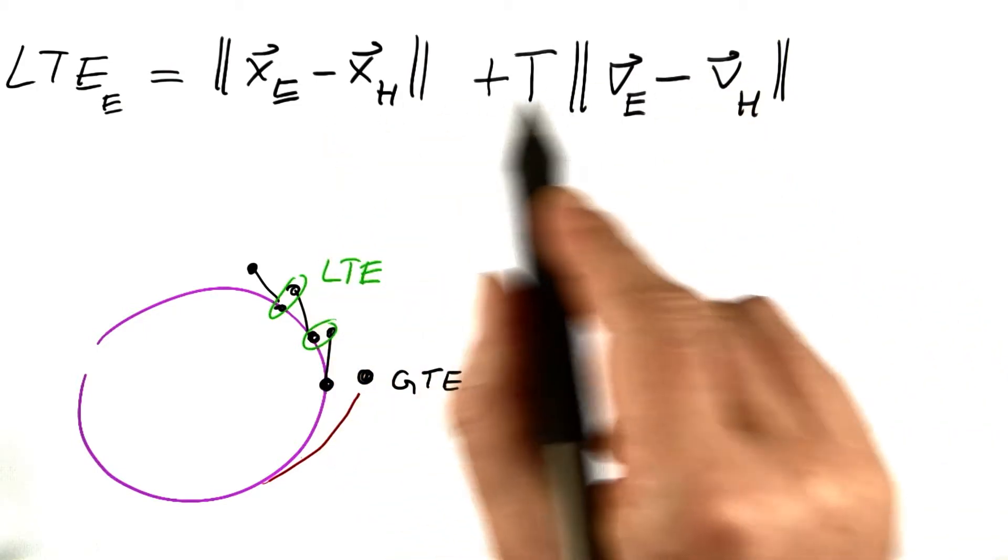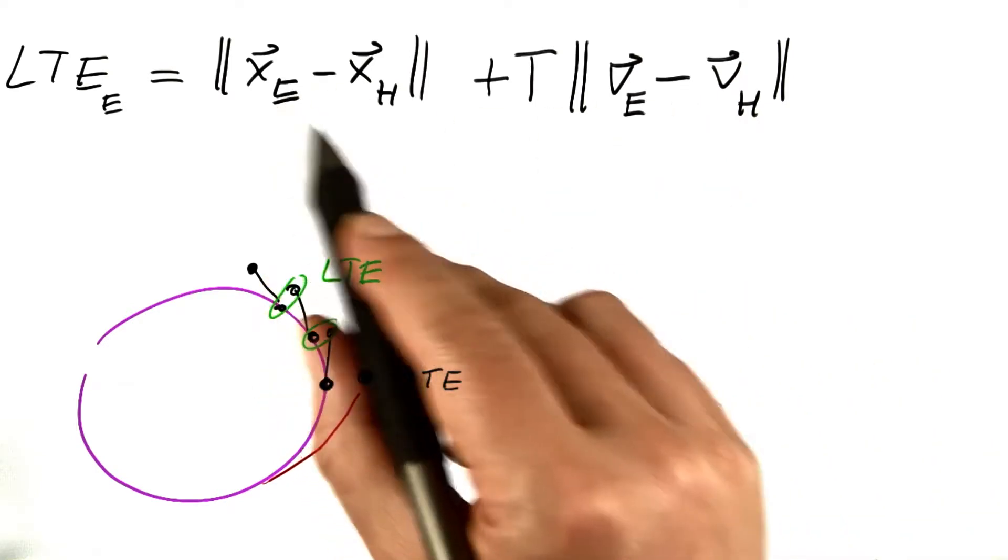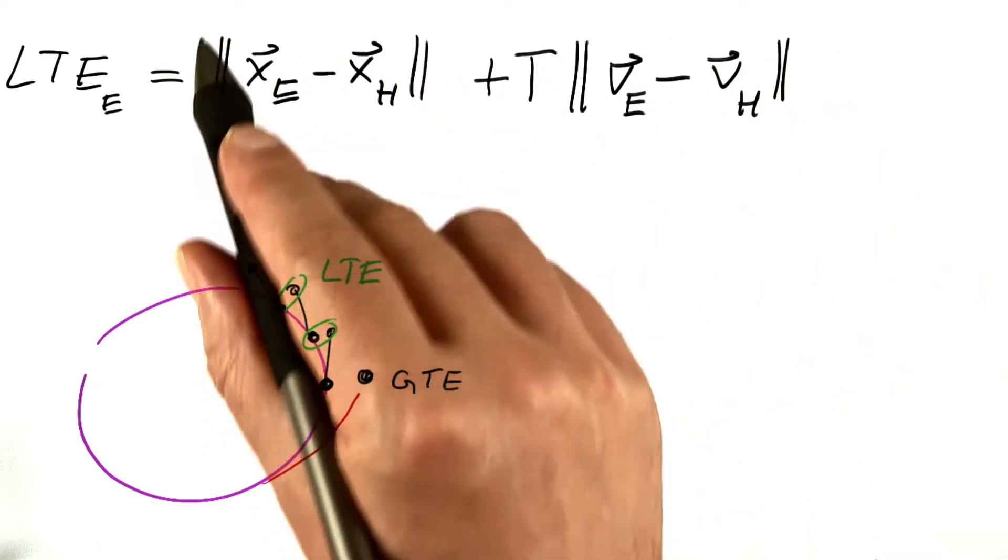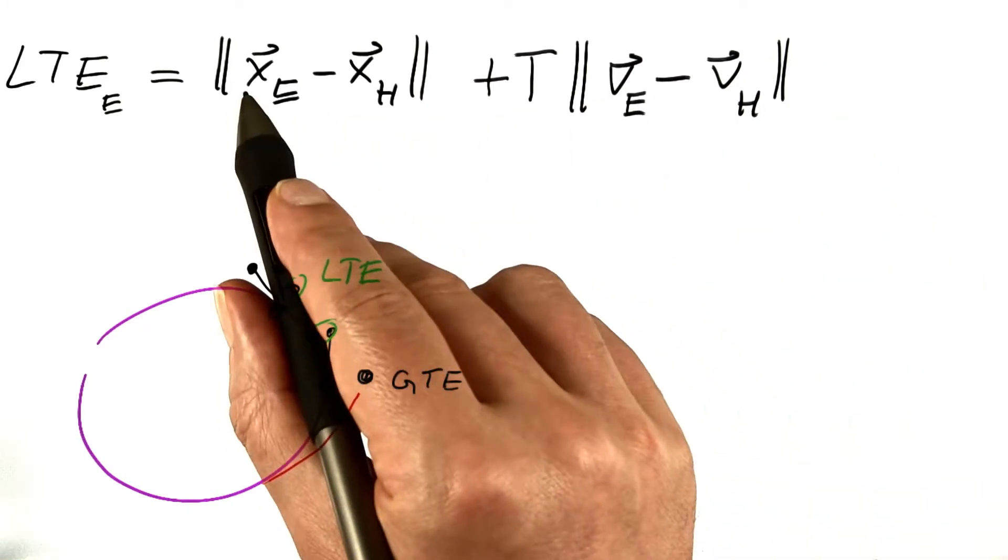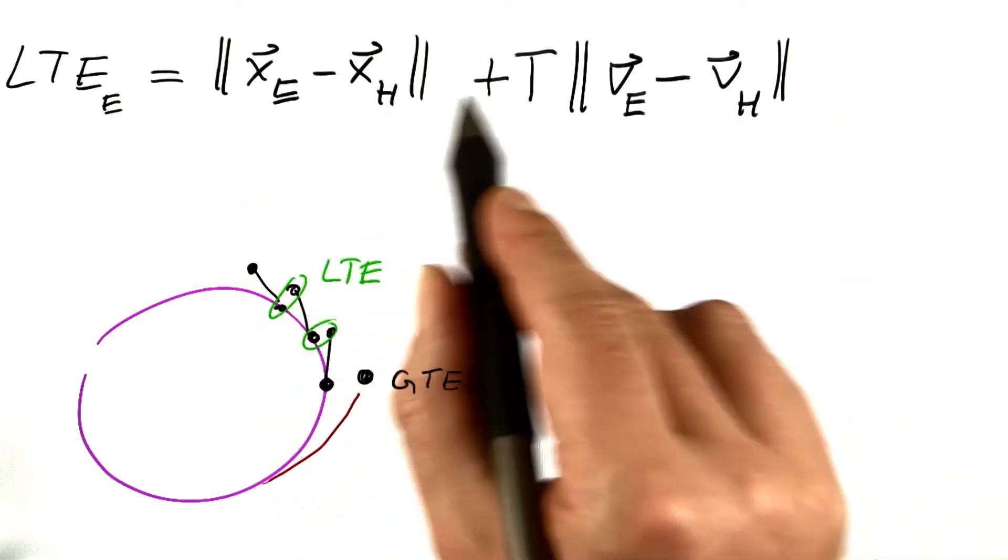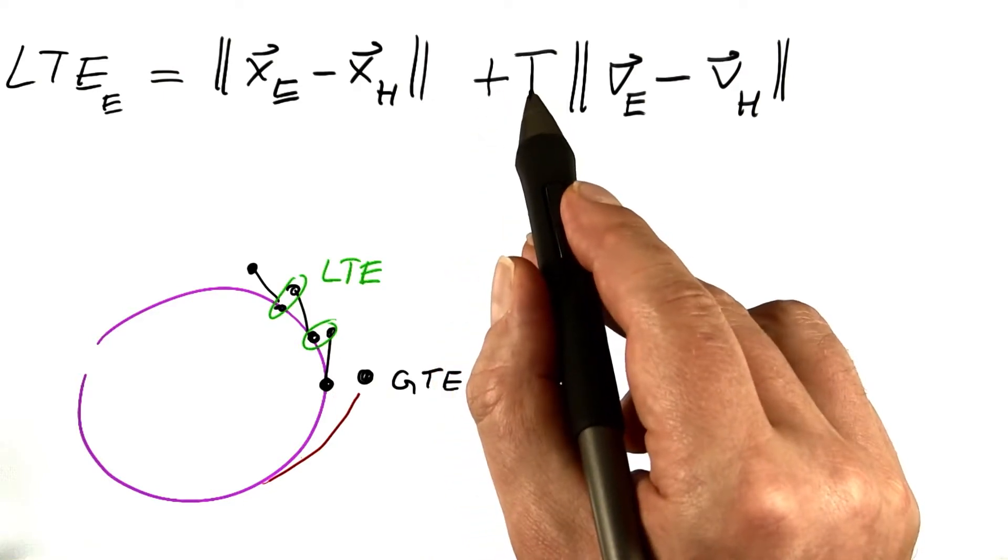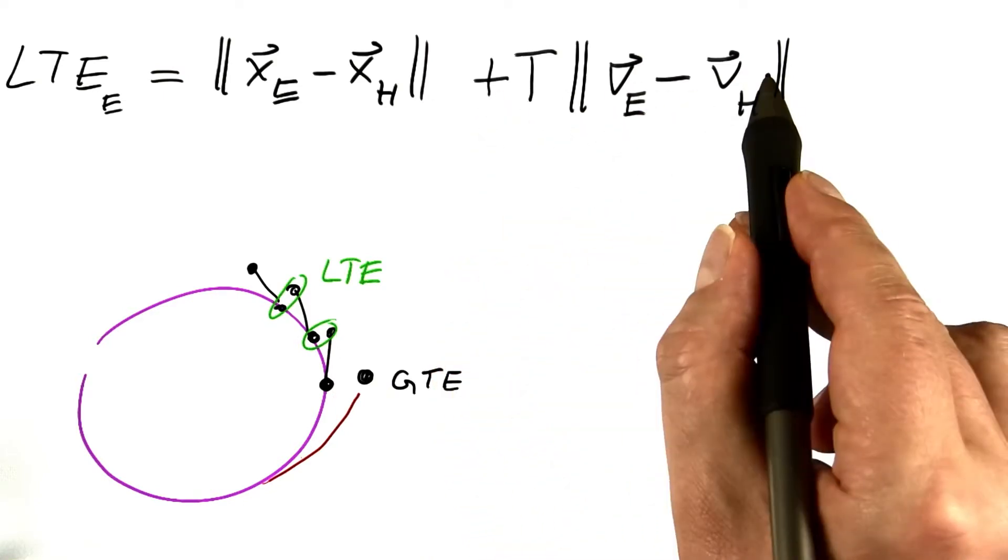There's other ways of combining these differences. You could form the square here, the square there, and then take the square root. But to make things simple, I'm simply using this distance plus the simulation time times that distance.